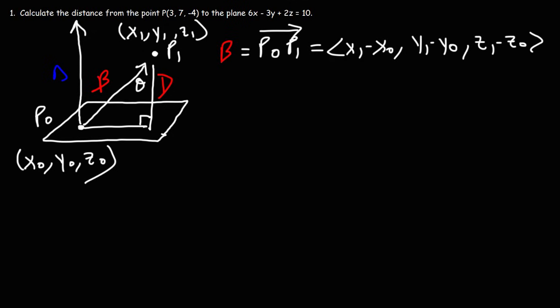Now, in order to find the value of D, we need to get the scalar projection of B onto N. So the scalar projection of B onto N will be this high. It's basically a component of vector B that's parallel to N, and notice that that component has the same height as D. So we can say that D is the absolute value of the scalar projection of vector B on vector N.